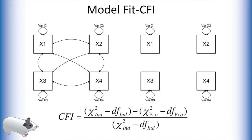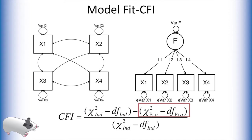The first of these fit indices OpenMX provides is the CFI. CFI has two components to its calculations. The first component, which appears in the numerator and denominator of this equation, is derived from a chi-square test between the independence model and the saturated model. The second part is derived from a chi-square test between our proposed factor model and the saturated model. So if the difference in likelihood between the saturated model and the independence model equals that of the difference between the saturated model and our model, then the top of this equation becomes zero, and CFI is zero in the worst fitting case. However, if our factor model is just as likely as the saturated model, the value in the red square here tends to zero, and thus CFI is one. So we want CFI to be as close to one as possible. In practice, CFI values over 0.9 tend to be considered adequate fit.